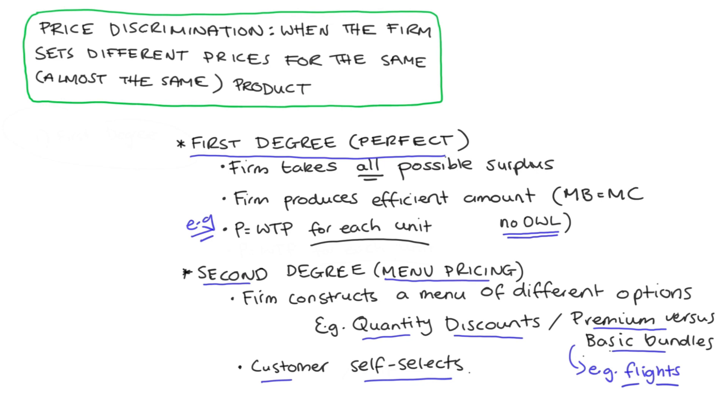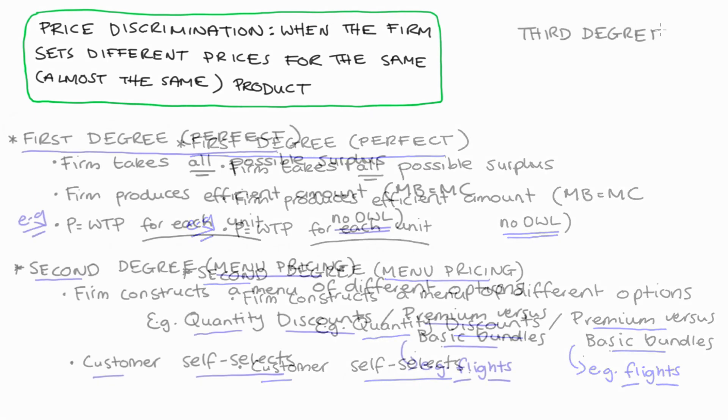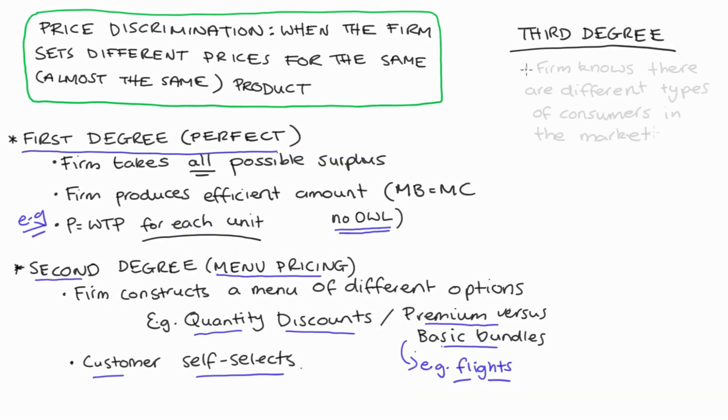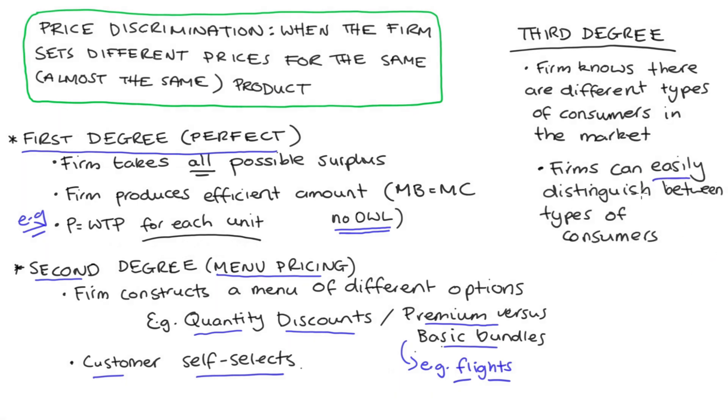And this second degree price discrimination kind of strategy is very different from third degree price discrimination, where our firm knows that there are different types of consumers in the market and they have a really easy way of distinguishing between those groups. For instance, a cinema might offer cheaper prices to students or pensioners. They have a low willingness to pay because they're not in paid employment. If they are able to identify students or pensioners through identification cards, once we have those identification cards, we can really easily discriminate between groups. All the firm really needs is that proof from the customer that they belong to one group or another.